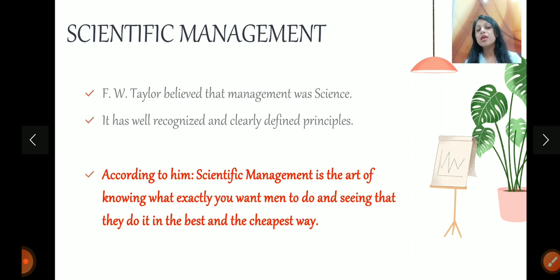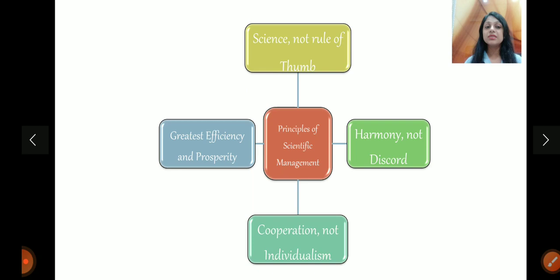So, in the theory of scientific management, the four principles given by Taylor was Science, not rule of thumb, Harmony, not discord, Cooperation, not individualism, and greatest efficiency and prosperity. Let's understand these principles one by one.